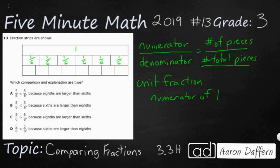And then underneath, counting: 1, 2, 3, 4, 5, 6, 7, 8. So these are all going to be eighths. We're going to compare sixths and eighths.